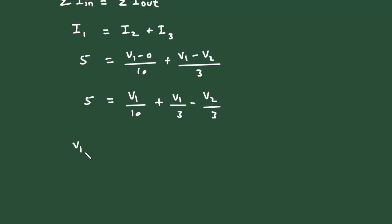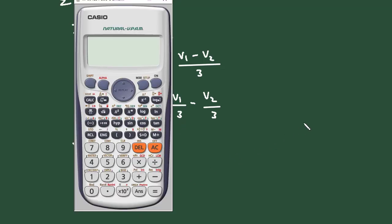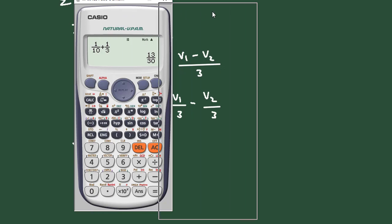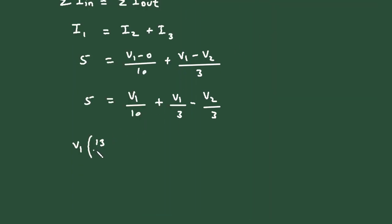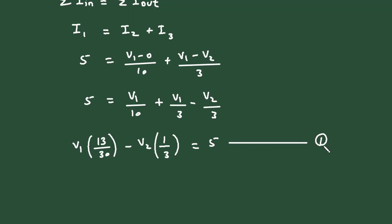Now if we solve this, it will be V1 in bracket (1 by 10 plus 1 by 3). So 1 by 10 plus 1 by 3 equals 13 by 30. So the equation becomes: V1 times (13/30) minus V2 times (1/3) equals 5. Let's say this is equation number 1.